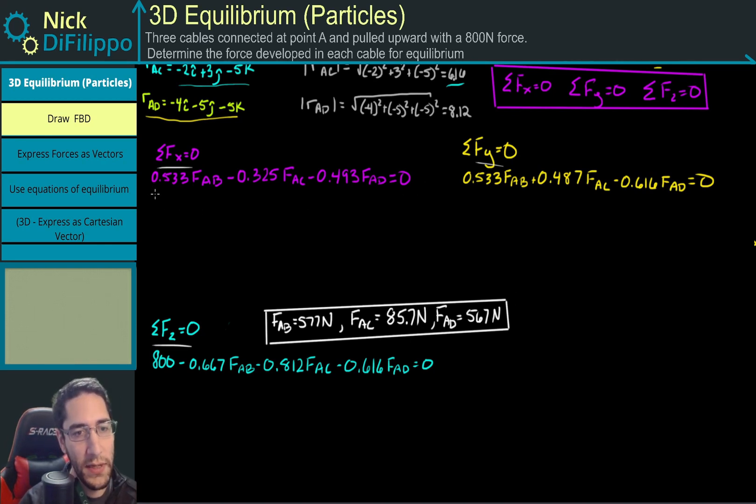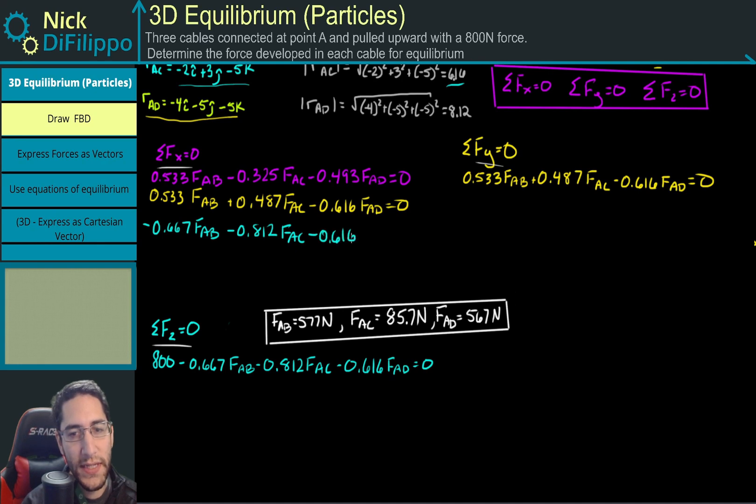I'm going to write this: 0.533 FAB plus 0.487 FAC minus 0.616 FAD equals 0. This is the sum of forces in the Y. Then I need to line up all my variables. So I have minus 0.325 FAB, and for the sum of forces in Z, minus 0.667 FAB minus 0.812 FAC minus 0.616 FAD equals the 800 goes to the other side, so minus 800.